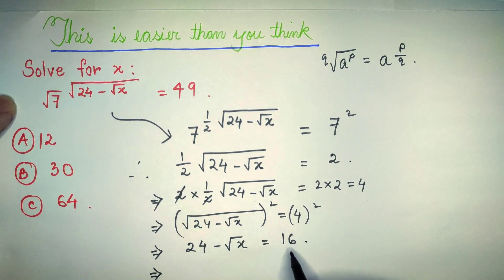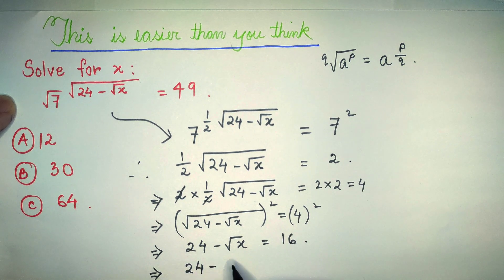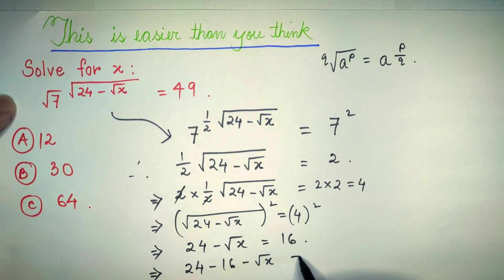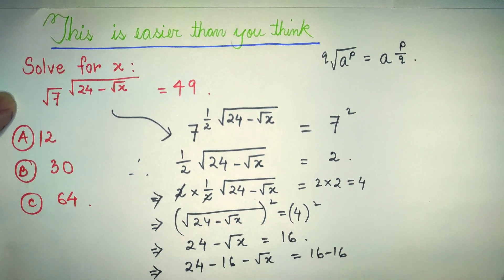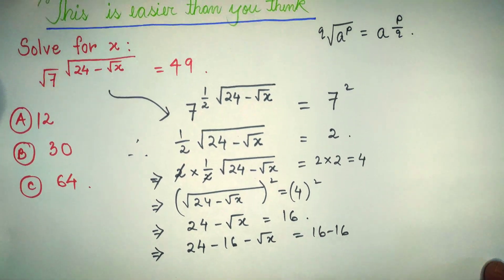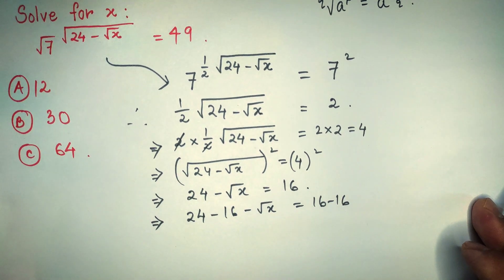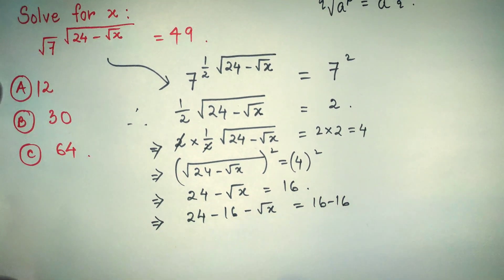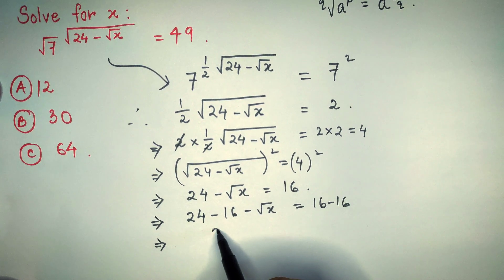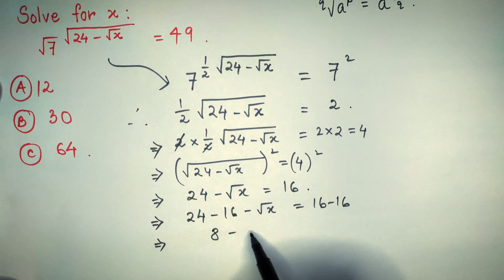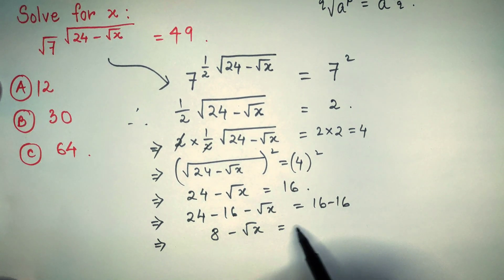Here, subtracting 16 from both sides, we get: 24 minus 16 minus root over x is equal to 16 minus 16. So 24 minus 16 is 8, and 16 minus 16 is 0, giving us: 8 minus root over x is equal to 0.